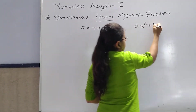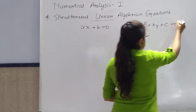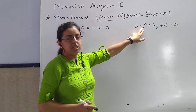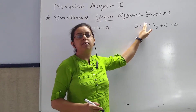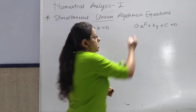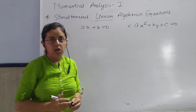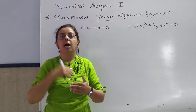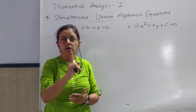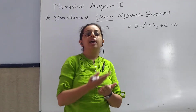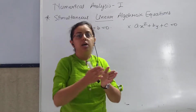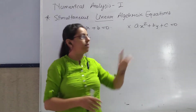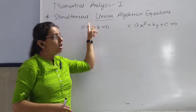For example, a·x² plus b·y plus c equals to 0 — that is not linear, because the highest power of variable x is 2. So linear means that in any equation, the highest power of the variable must be 1, no matter how many variables the equation has.